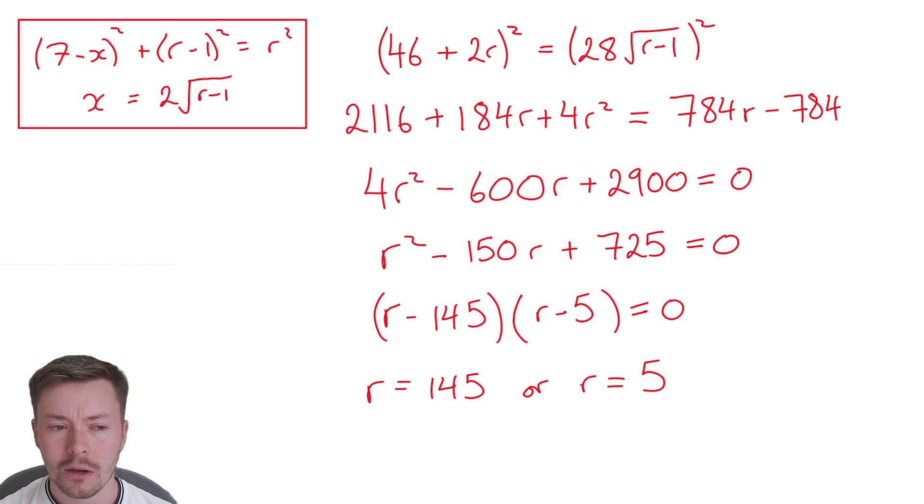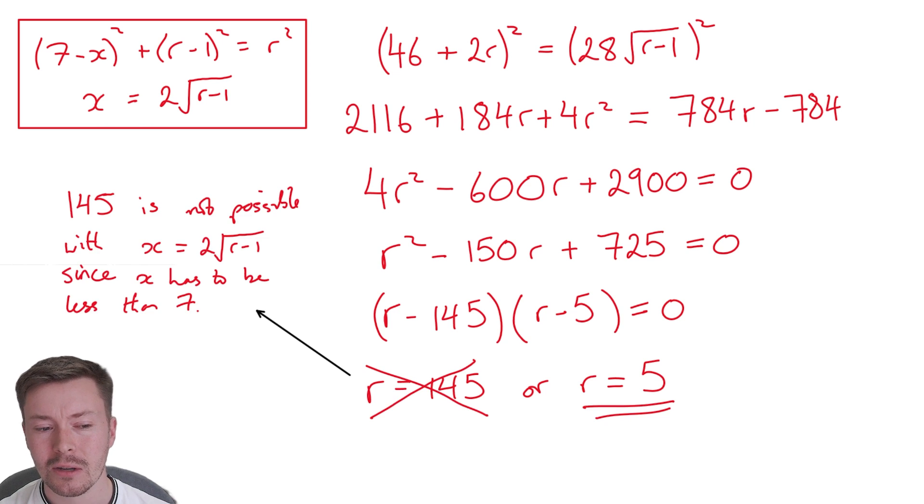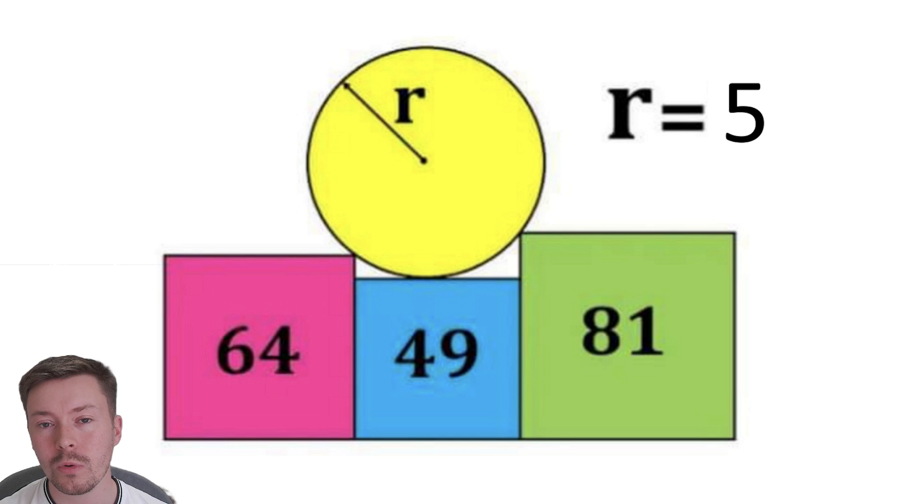Now, 145, does that seem right? I need to check my original equations and the diagram. Would that work? Does that make sense? Well, actually, 145 is not possible because with the diagram that we've got, x, which we've said x has to be positive, but x also has to be less than 7. And if we use r as 145, you end up with x is 24, which doesn't really make any sense. So we can't have 145. And that means that the only solution is r equals 5.